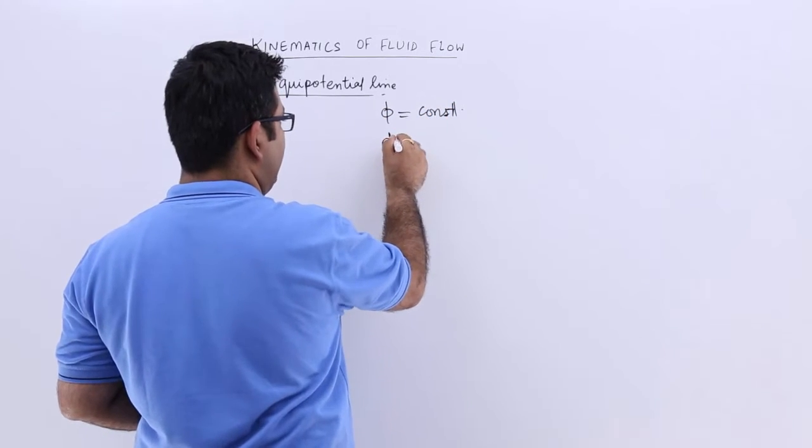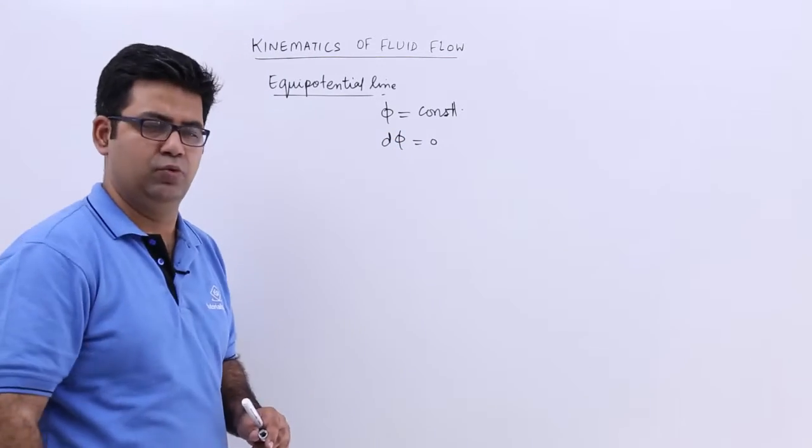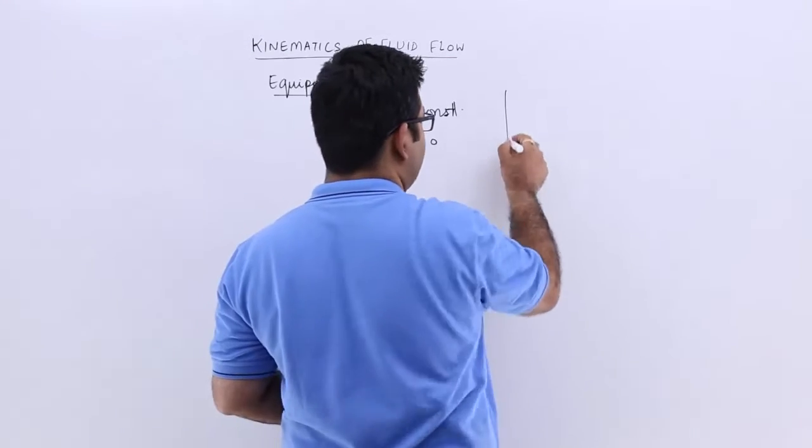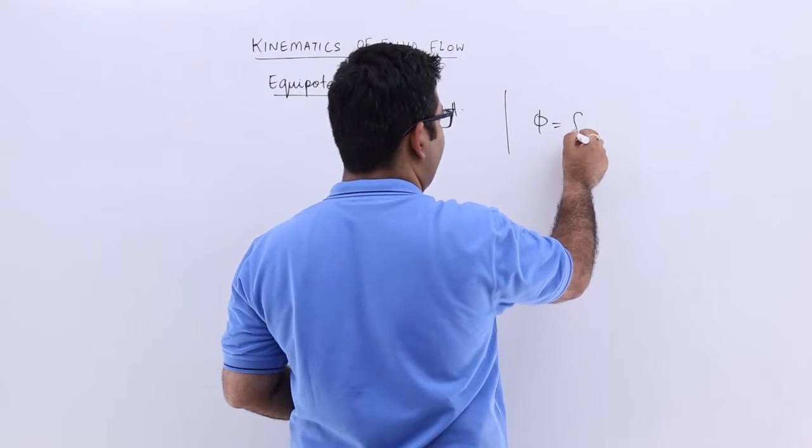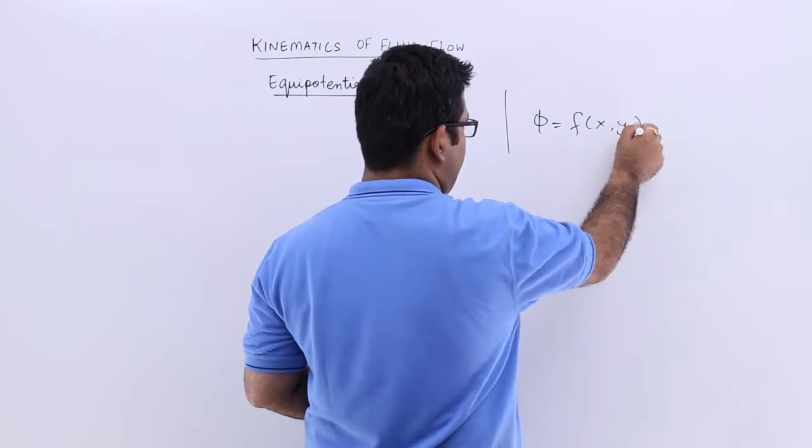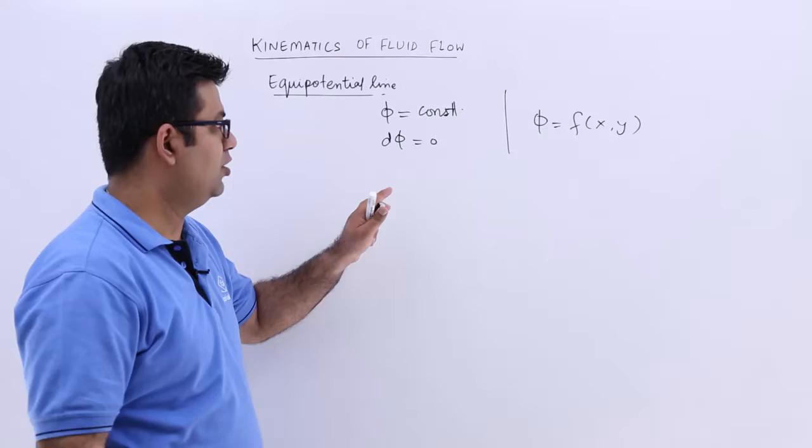So, this means that d phi would be 0. But, in actual, what happens is that phi is a function of x and y. It is not a constant value.